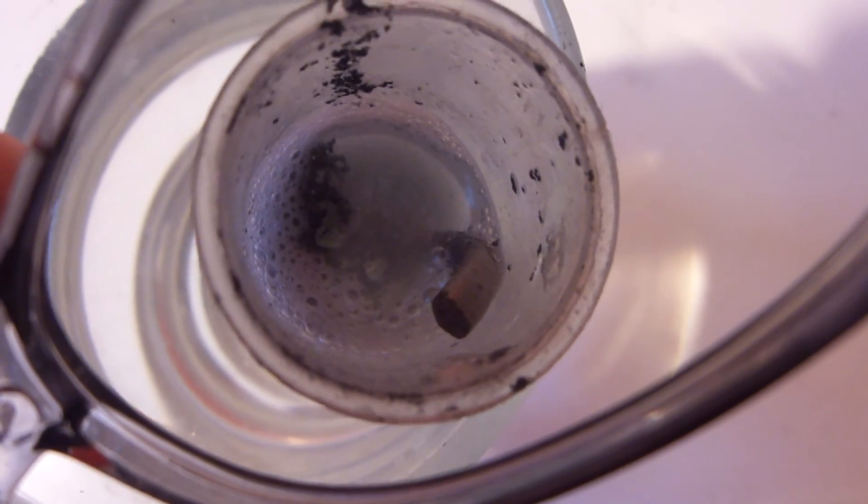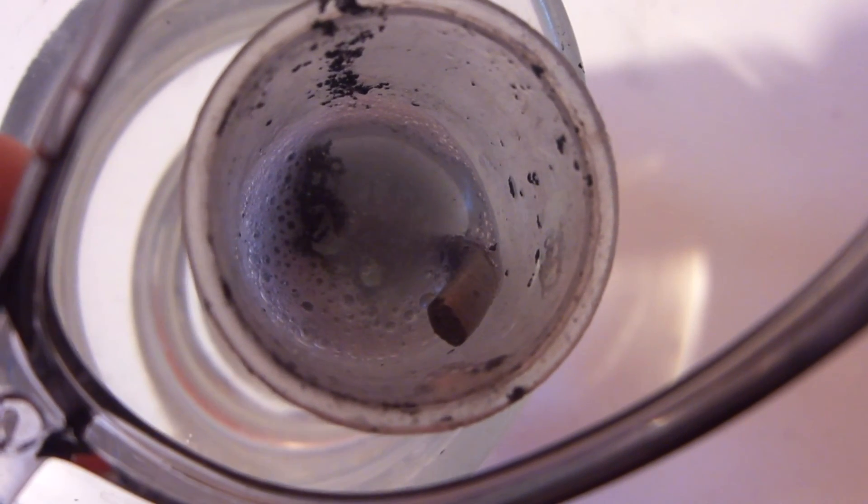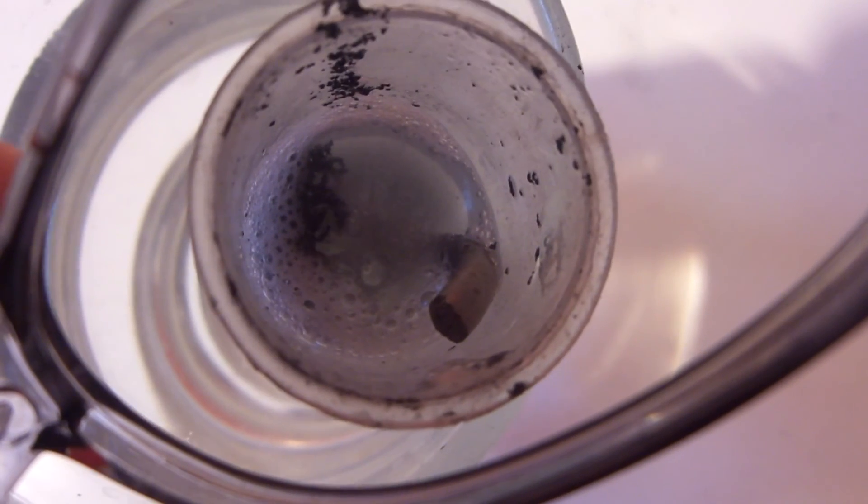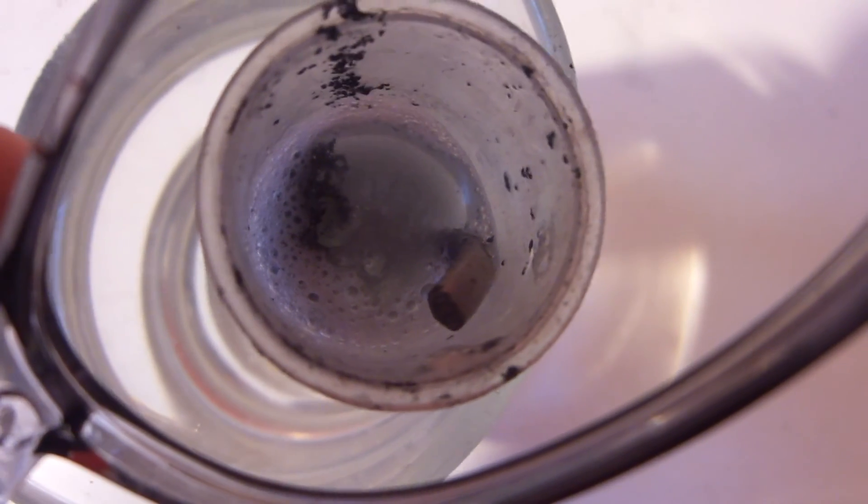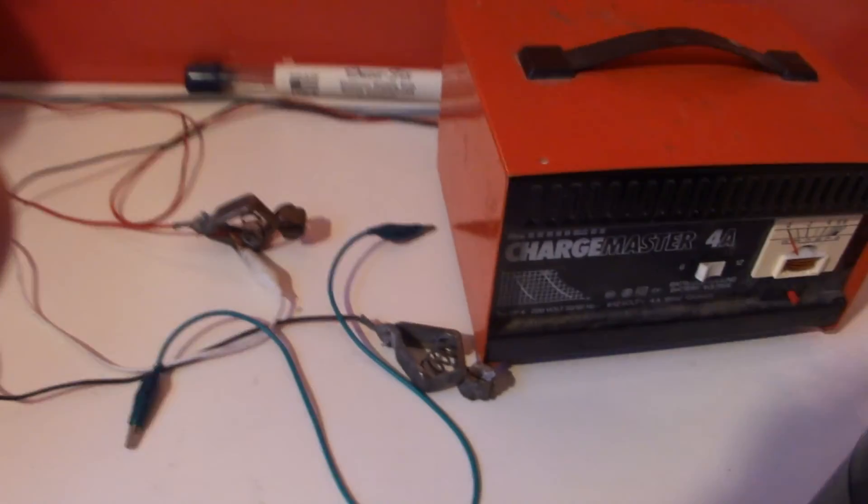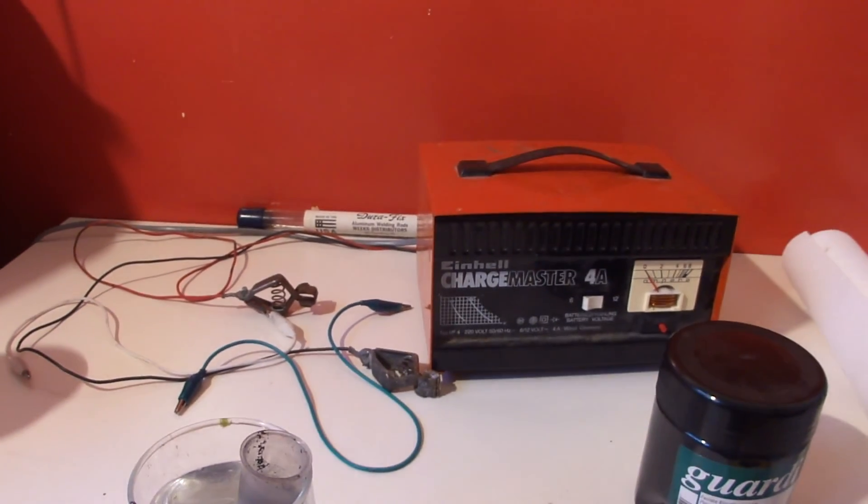But we want now to have this kind of chloride acetate layer or something like this. Okay, I have to do this via electrolysis now. Okay, one moment. Next video.